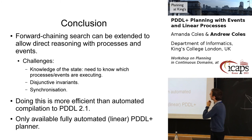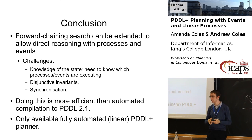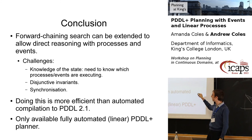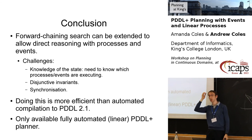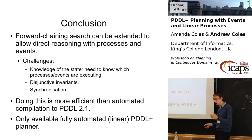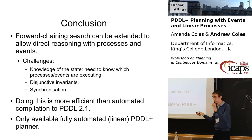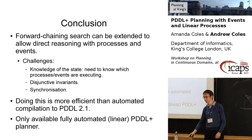To conclude, I've talked about forward-chaining search and the three challenges of handling processes and events: we need to know what the state is, which is fundamental to state-space search; we have to manage disjunctive invariants because of how to negate conditions on processes; and we have to synchronize things to make sure processes happen as soon as certain conditions become true. It's more efficient than the compilation approach, and what we get is the only fully automated linear PDDL Plus planner. Thanks.